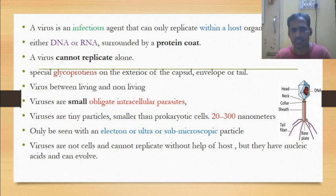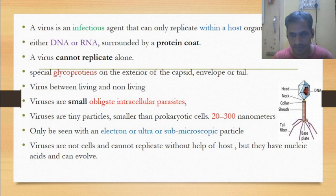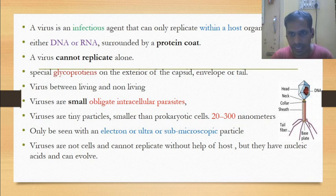Virus is intermediate between living and non-living things. Why? Virus has genetic material — because living things make their own copies. Why are they non-living? Because they can be crystallized and they do not have protoplasm. So, virus is a small obligate intracellular parasite, a tiny particle smaller than prokaryotic cells.